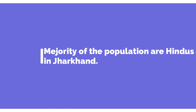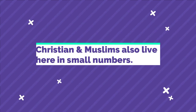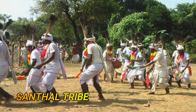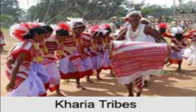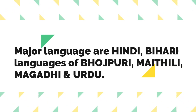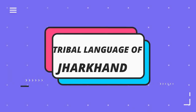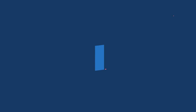The majority of the population in Jharkhand are Hindus; Christians and Muslims also live here in small numbers. Different tribal groups — the Santal, the Oraon, the Munda, the Kharia, and the Ho — live here in significant numbers. Languages spoken include Hindi, Bihari languages of Bhojpuri, Maithili, and Magadhi, Urdu, and tribal languages such as Munda, Santal, and Ho.